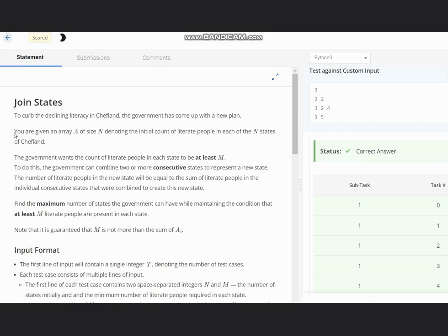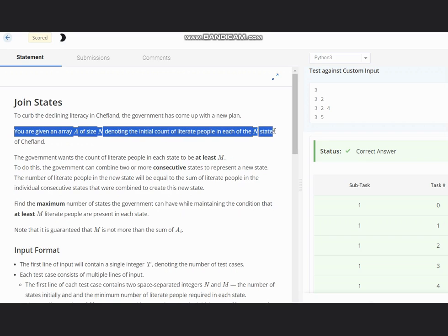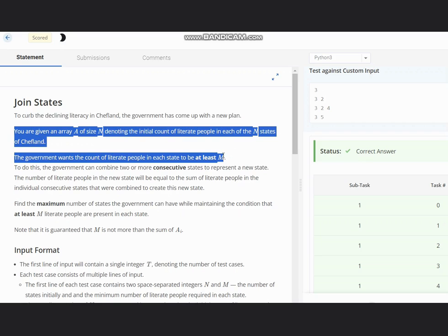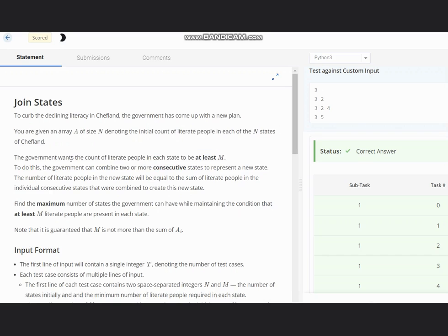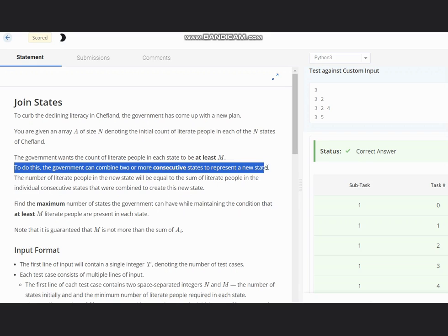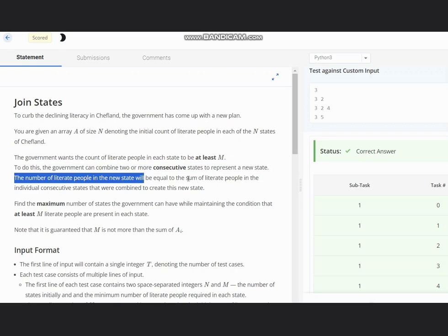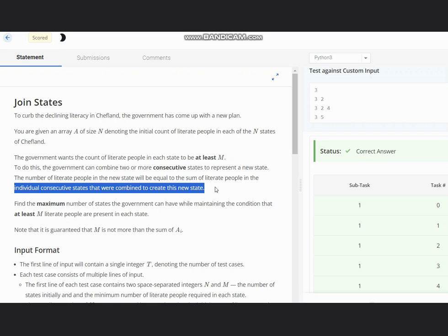You are given an array of size n denoting initial count of literate people in each of the n states of Sheflin. The government wants the count of literate people in each state to be at least m. To do this, government can combine two or more consecutive states to represent a new state. The number of literate people in the new state will be equal to the sum of literate people in the individual consecutive states that were combined to create this new state.